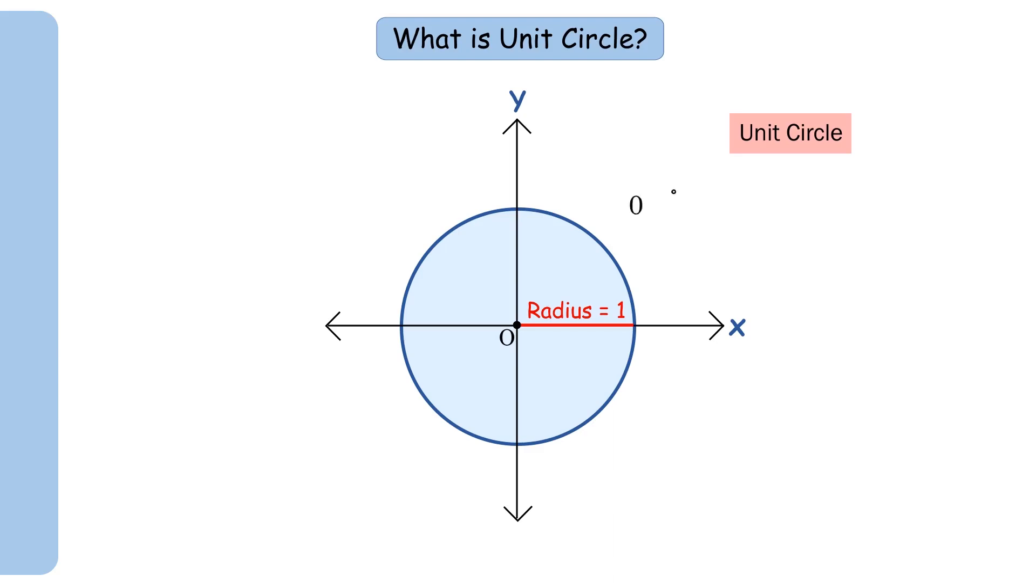The unit circle is like a clock, but instead of hours it has got angles all around from 0 degrees all the way to 360 degrees. Now let's imagine a point on the unit circle.